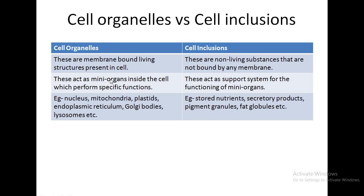These cell organelles act as mini organs inside the cell which perform specific functions, whereas the cell inclusions act as a support system for the functioning of those mini organs — that is, cell inclusions help the cell organelles to perform their functions. These cell organelles include the nucleus, mitochondria, plastids, endoplasmic reticulum, Golgi bodies, lysosomes, etc. Whereas cell inclusions include stored nutrients, secretory products, pigment granules, fat globules, etc.